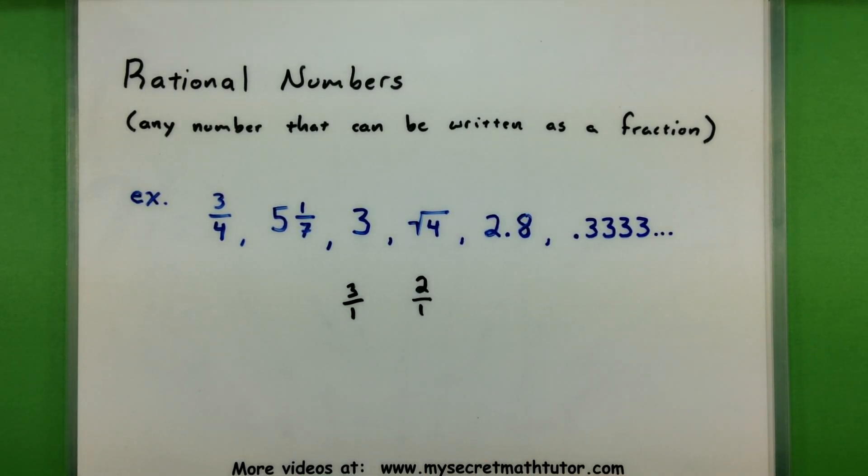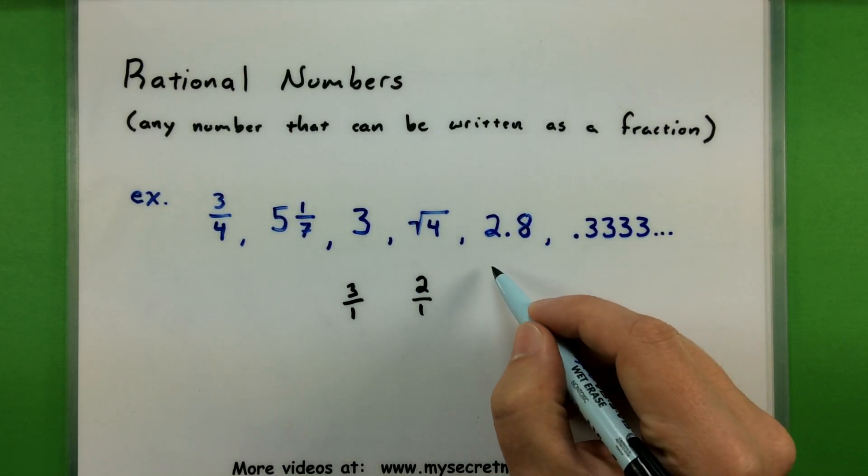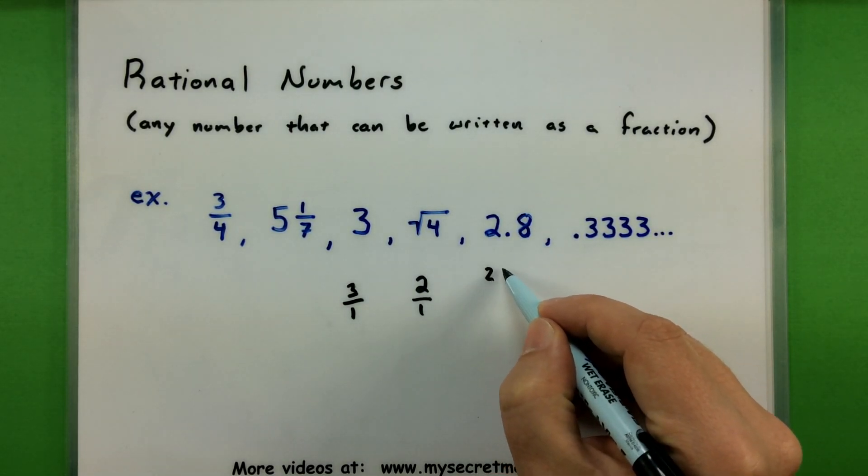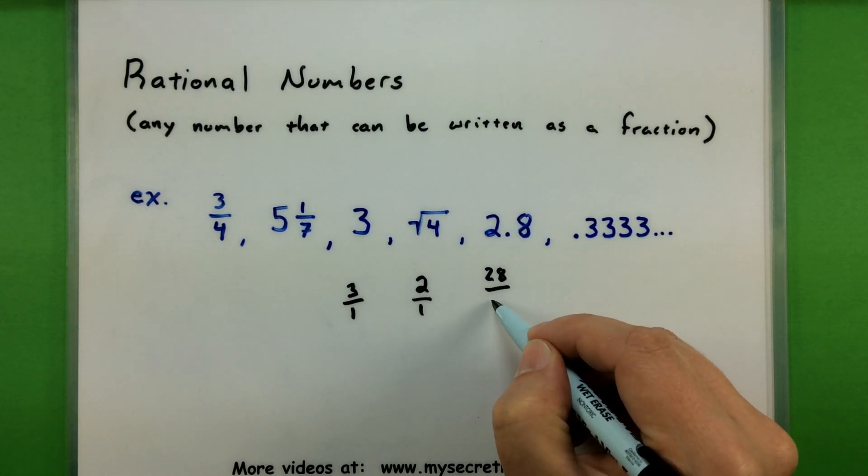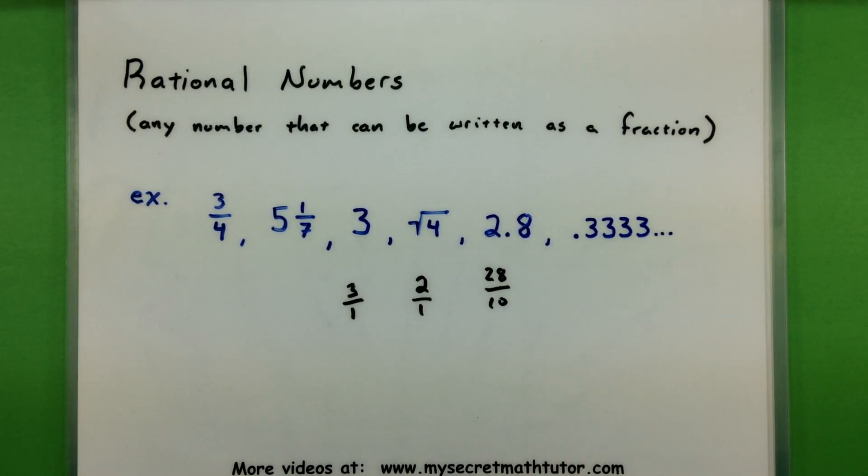A lot of decimals that stop can also be written as a nice rational value. And that's simply by taking the number and putting it over whatever decimal place it terminates at. So something like 2.8 can really be written as 28 tenths. So since I can write it as a fraction, it is a type of rational number.